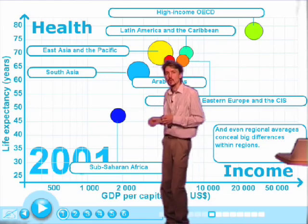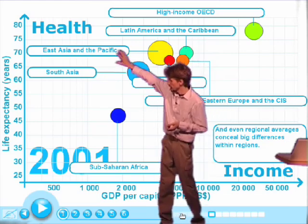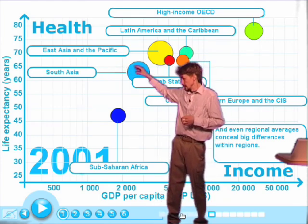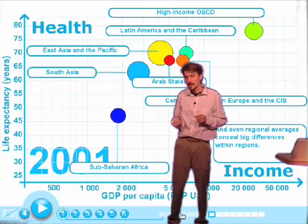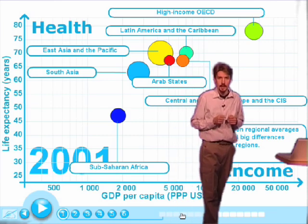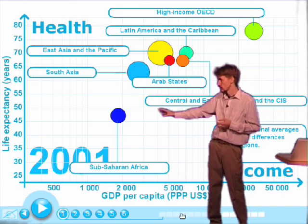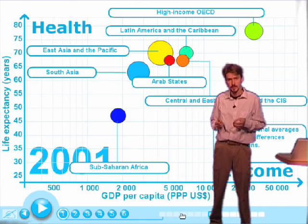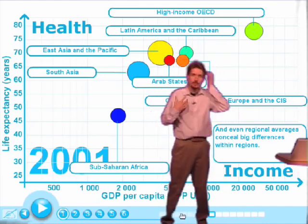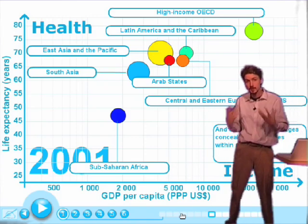Eastern Asia went in the other direction and became richer, moving from left to right in the graph. We had South Asia falling a little bit behind, and then Sub-Saharan Africa — it is painfully clear which region is falling behind the most, with a life expectancy rate under 50 years of age. But this is also an average, and we have to split up Africa to see the differences between countries in Africa.